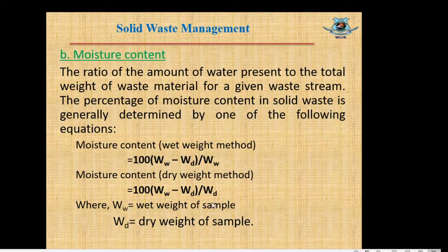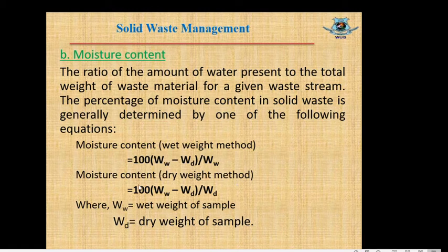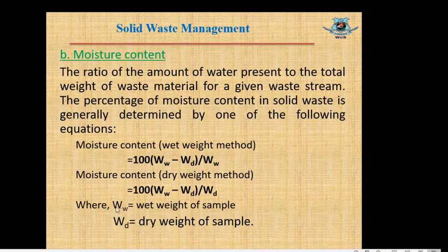The percentage of moisture content in solid waste is generally determined by one of the following equations. The first is the wet-weight method: M = 100 × (Ww − Wd) / Ww, where Ww is the wet weight of the sample and Wd is the dry weight of the sample. The second is the dry-weight method: M = 100 × (Ww − Wd) / Wd, where Ww and Wd are the same as above.